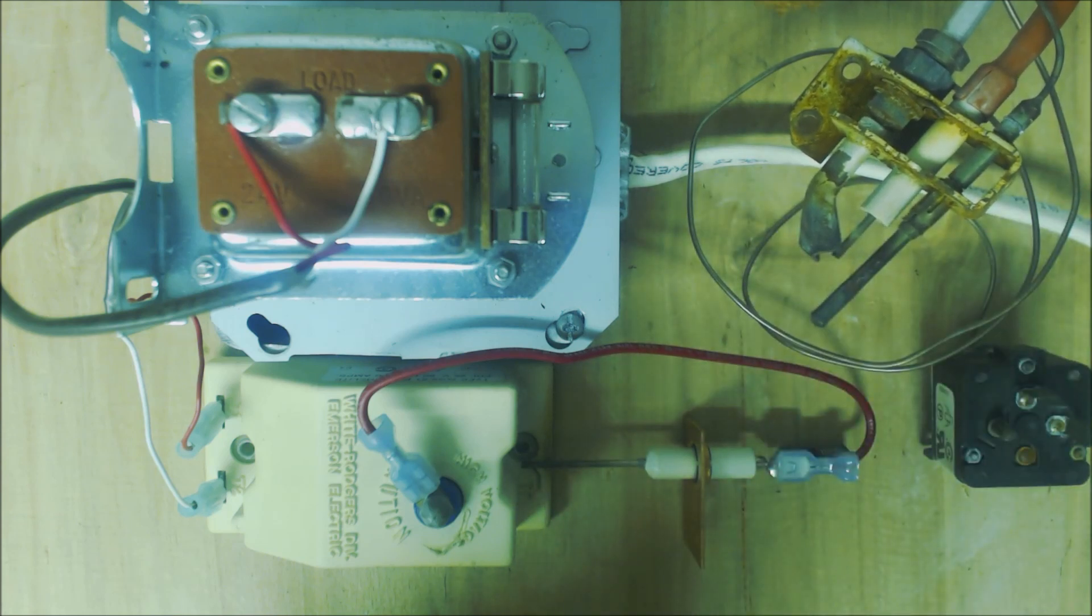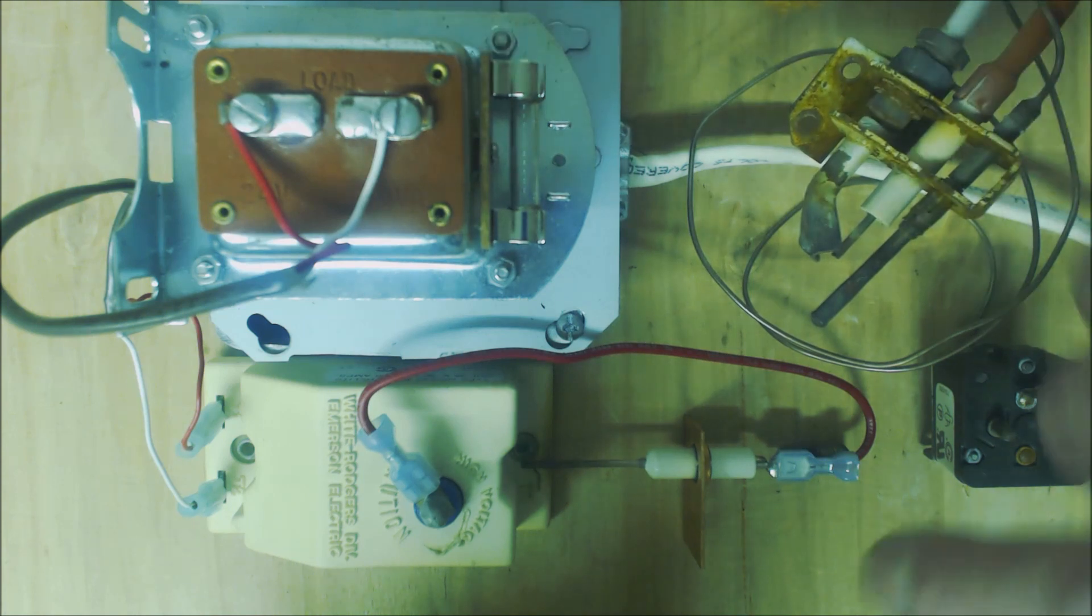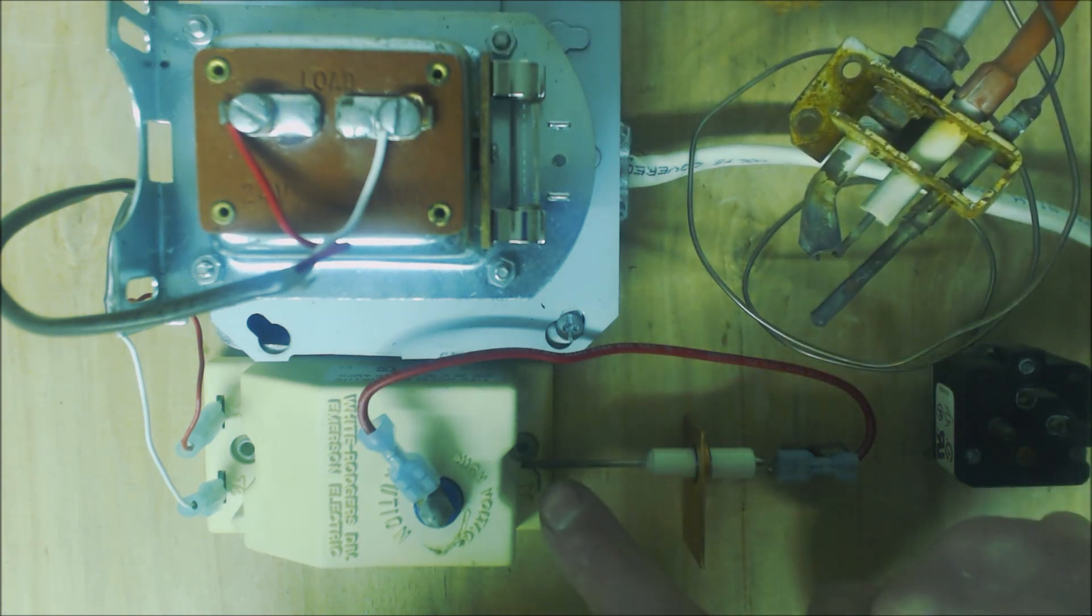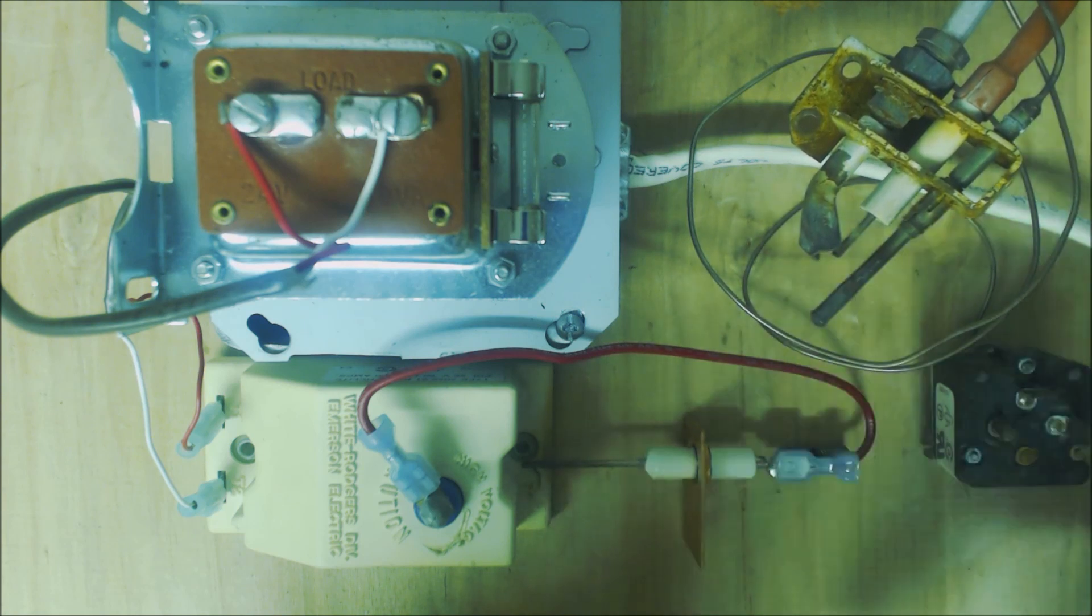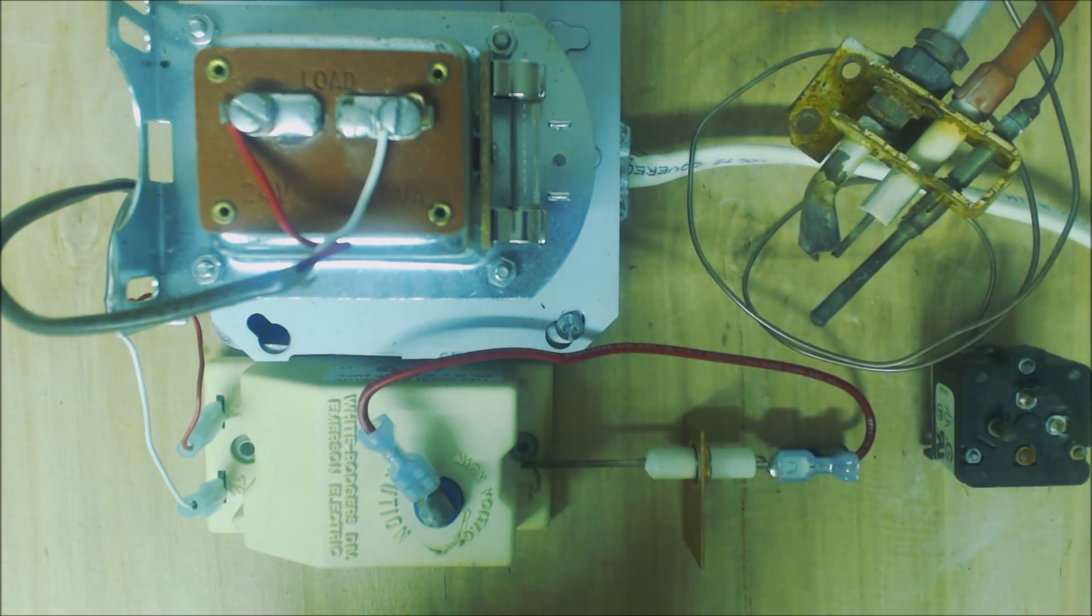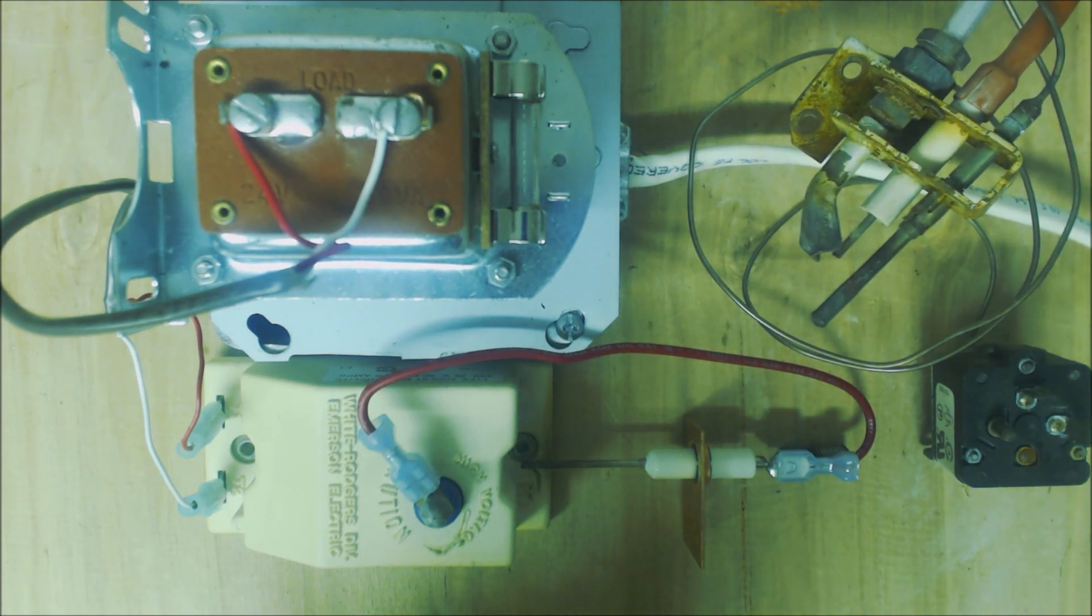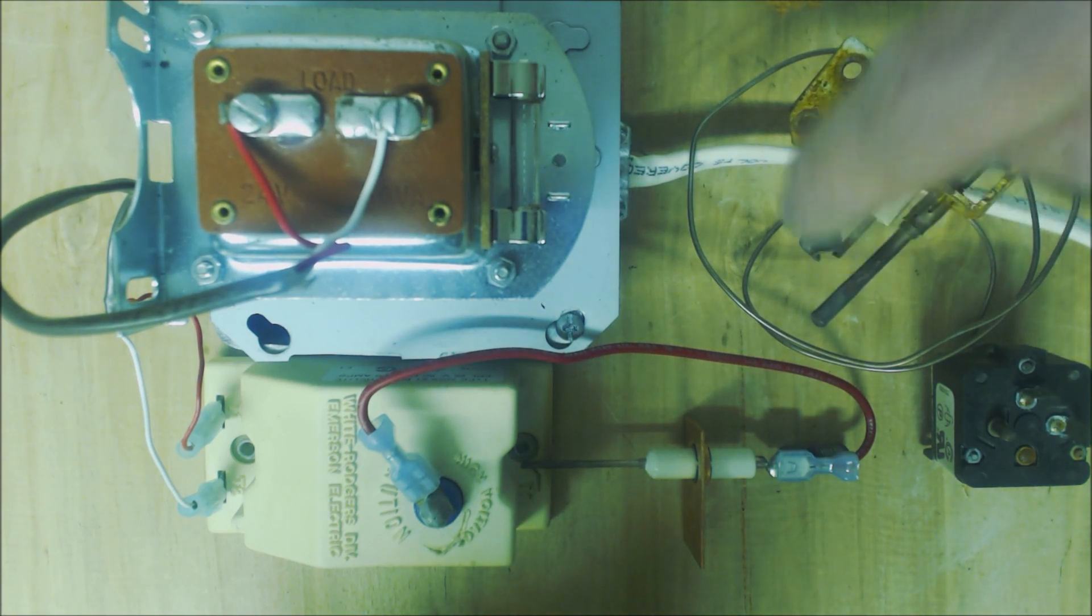I'm going to turn the voltage on - the 24 volts to the transformer - and we're going to have about a 6,000 volt spark right across here. It's going to do it intermittently. You see that spark right there - that's what's going to occur right at the pilot tube.